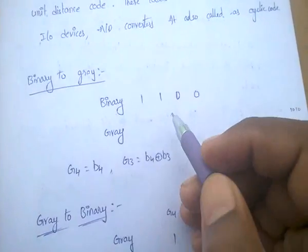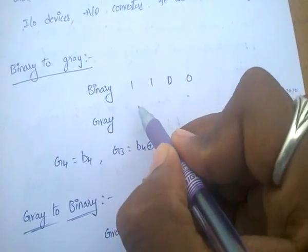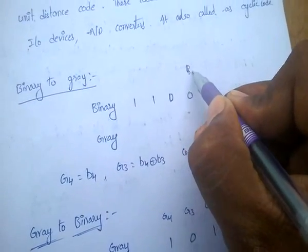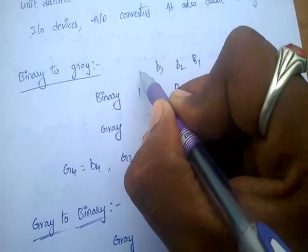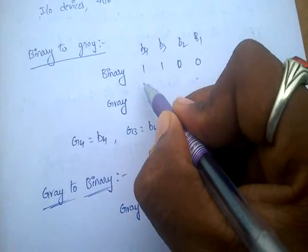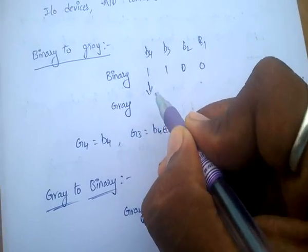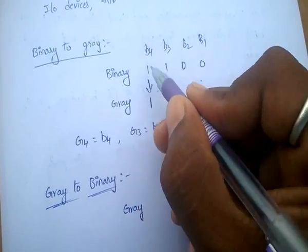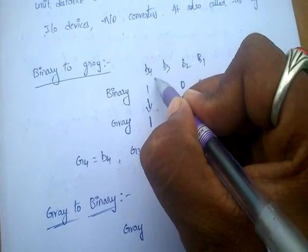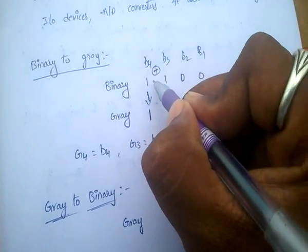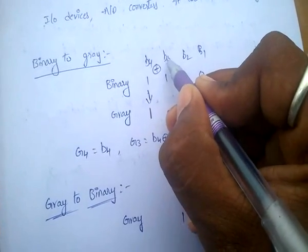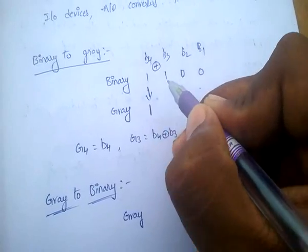Conversion of binary to gray. Here the binary bits are B1, B2, B3, B4. For conversion, write the first digit — that is the MSB — as it is. For the second one, find out the exclusive-OR between B4 and B3. For 1 XOR 1 equals 0.